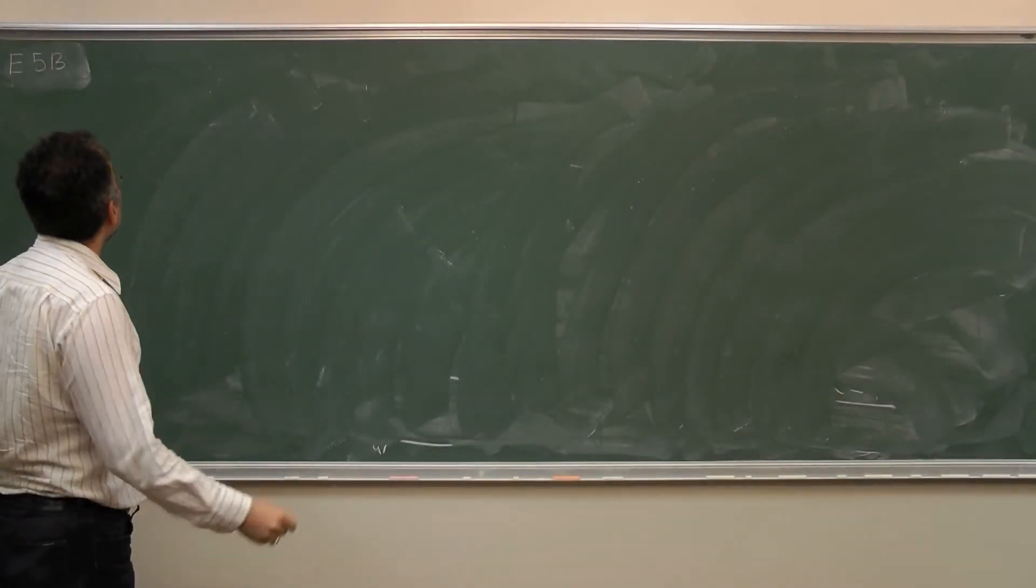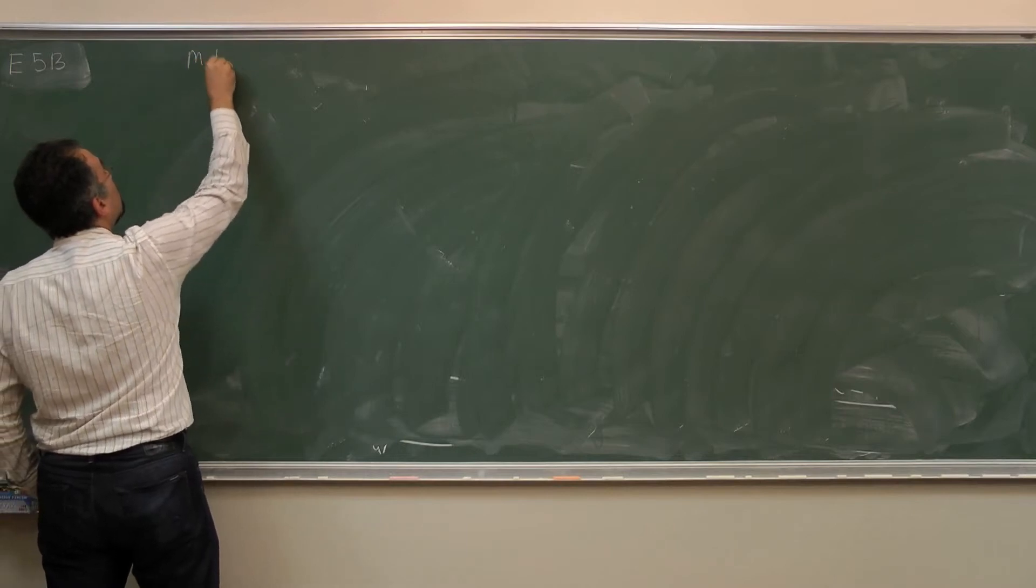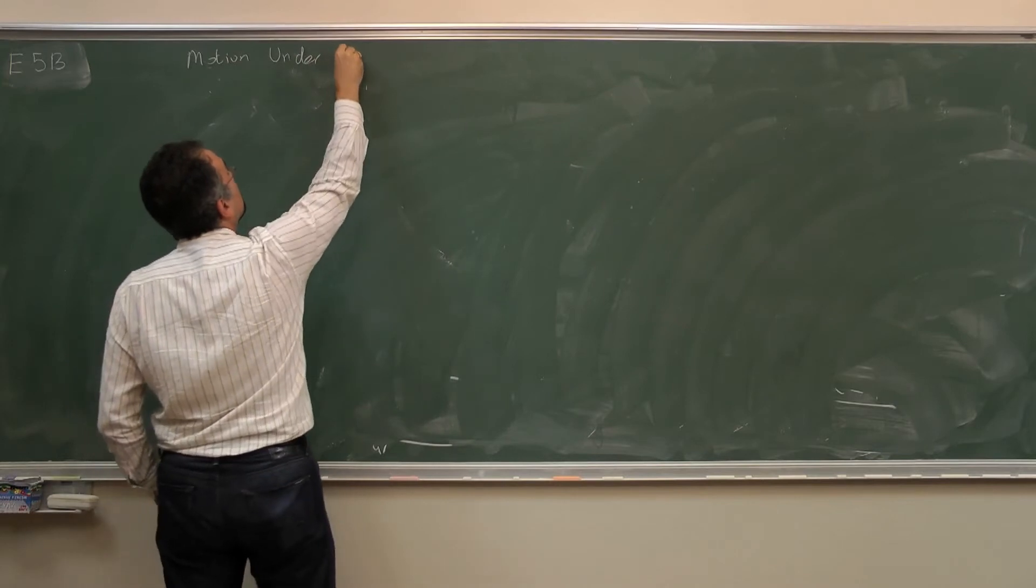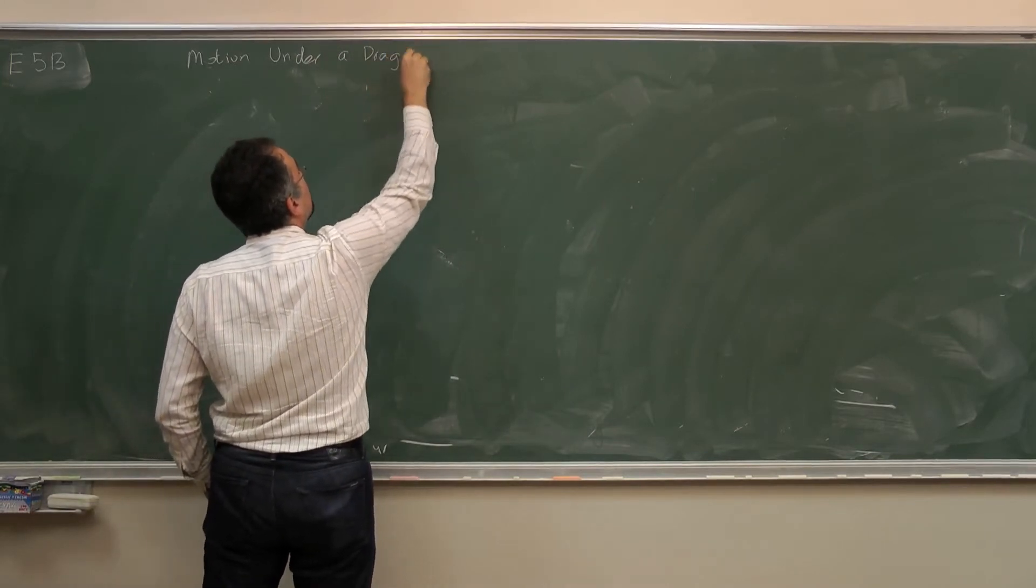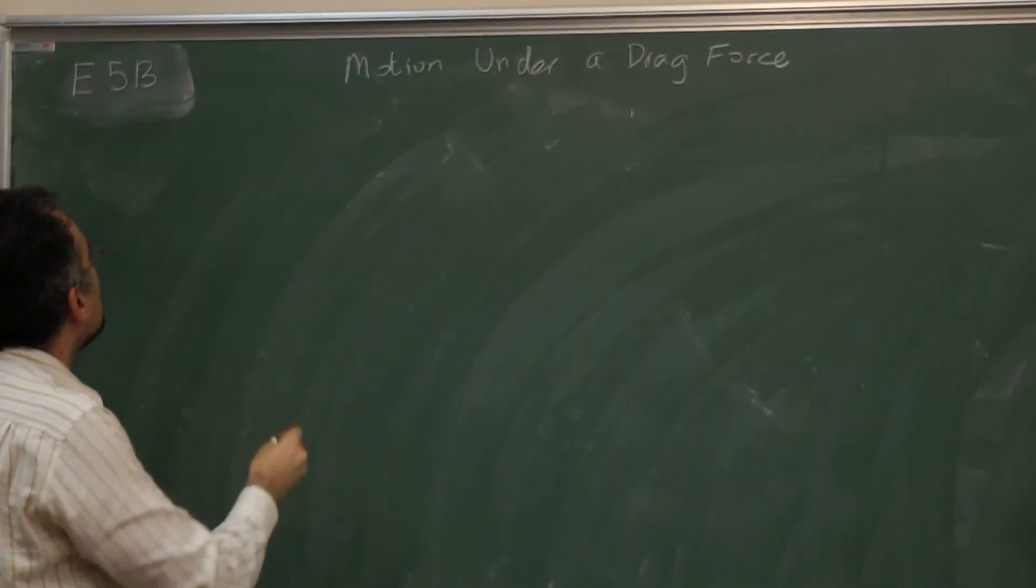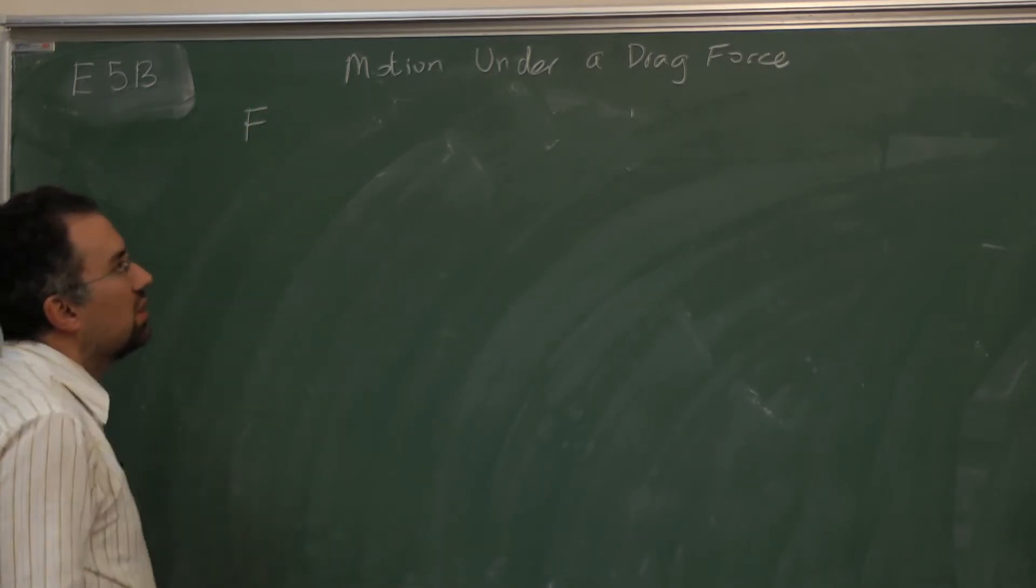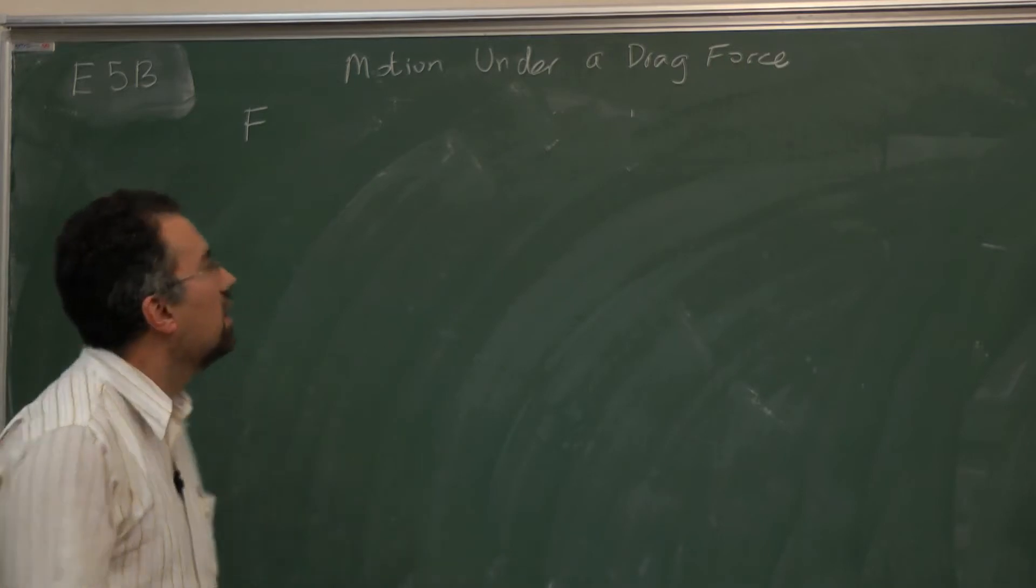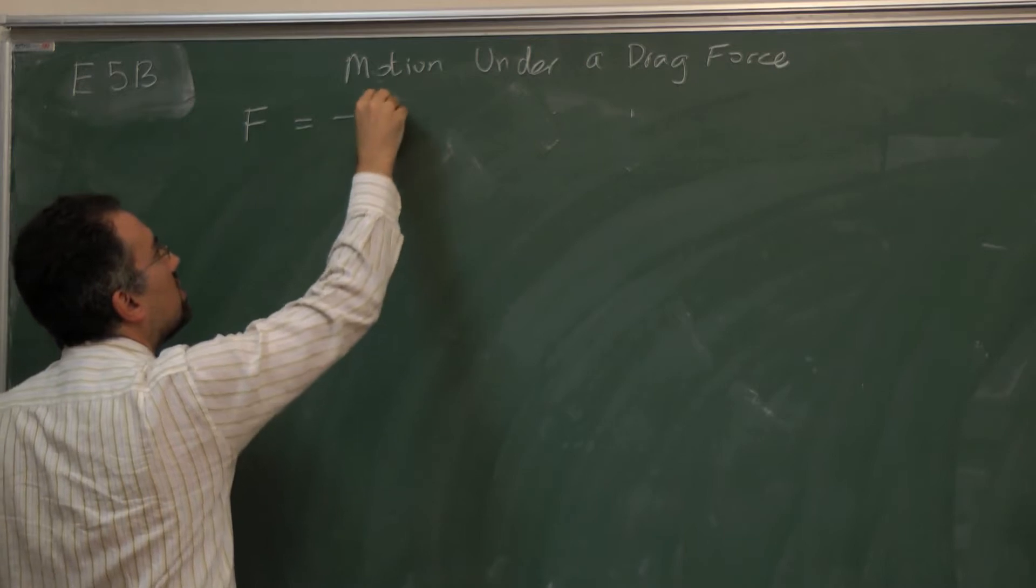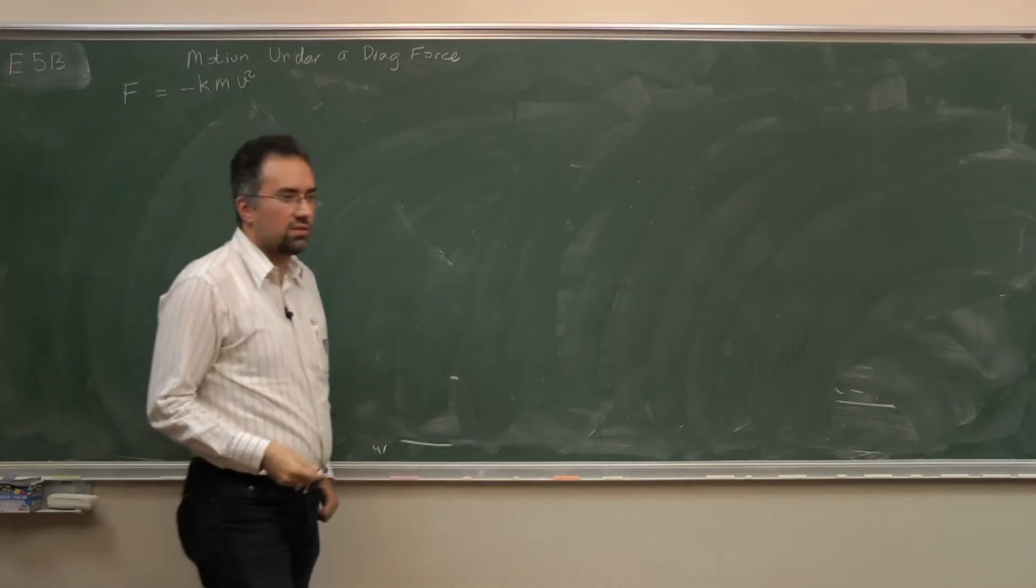The title of this problem is motion under a drag force. The problem is stated as follows: an object moves under a force F which is a resistive force, given as minus km v squared, where v is the speed of the object.